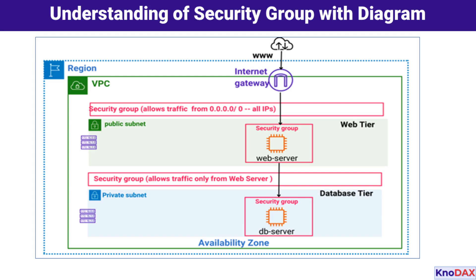Let's understand security groups using this diagram. We see a typical AWS Virtual Private Cloud (VPC) architecture designed with security best practices in mind. In the web tier in the public subnet, we host a web server. Notice how the security group associated with the web server allows traffic from any IP address (CIDR block with all zeros) on port 80. This setup is necessary because the web server needs to be accessible over the internet. The internet gateway connects the public subnet to the internet, enabling users to reach the web server.